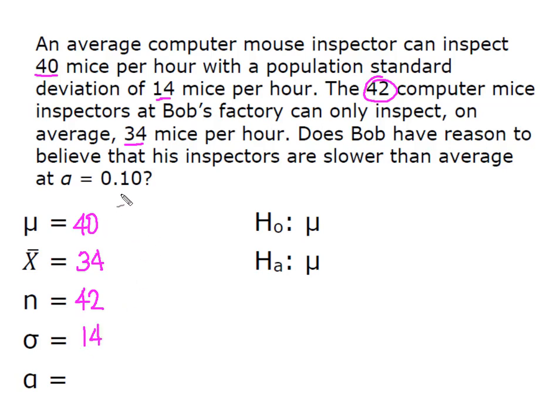So we're going to set up our null and alternative hypothesis. We know that the hypothesized value of the mean is currently 40 mice per hour. Now I need to determine my sign. Does Bob have reason to believe they are slower than average? That means they can inspect fewer than 40 mice. Because we know that H₀ and Hₐ are mathematical opposites, this has to be greater than or equal to. I knew to put my less than sign in Hₐ because there is never an equal to sign in the alternative hypothesis.